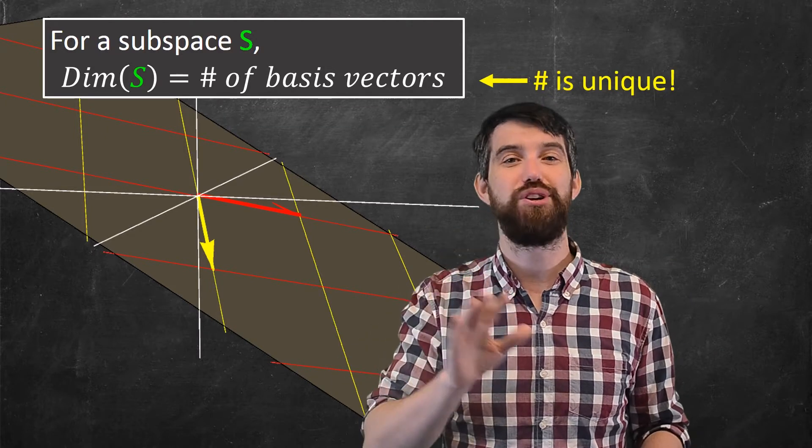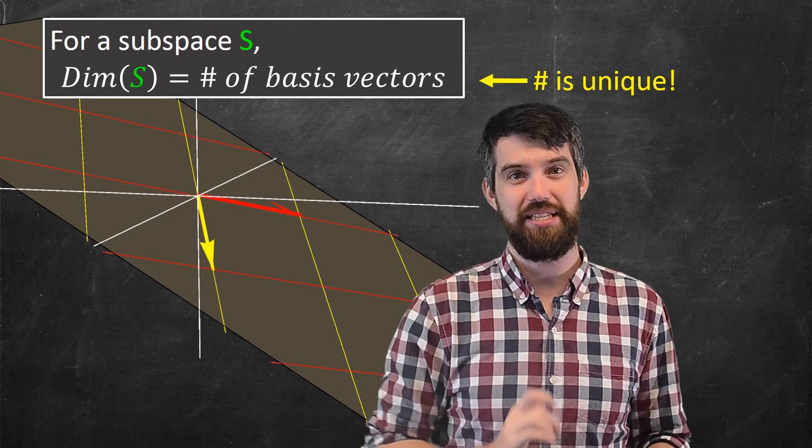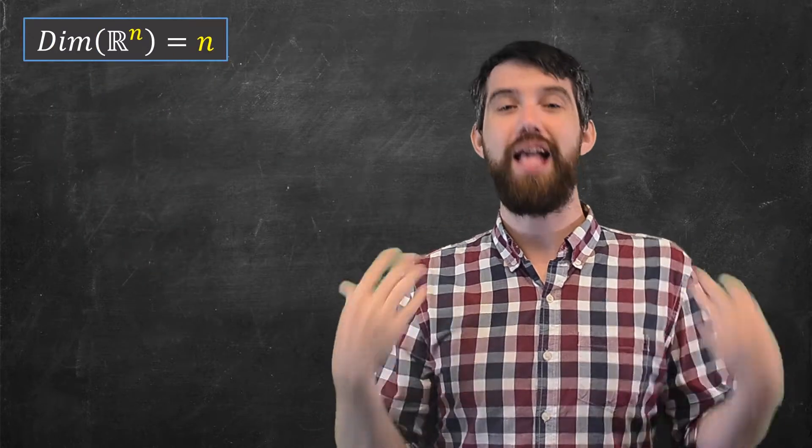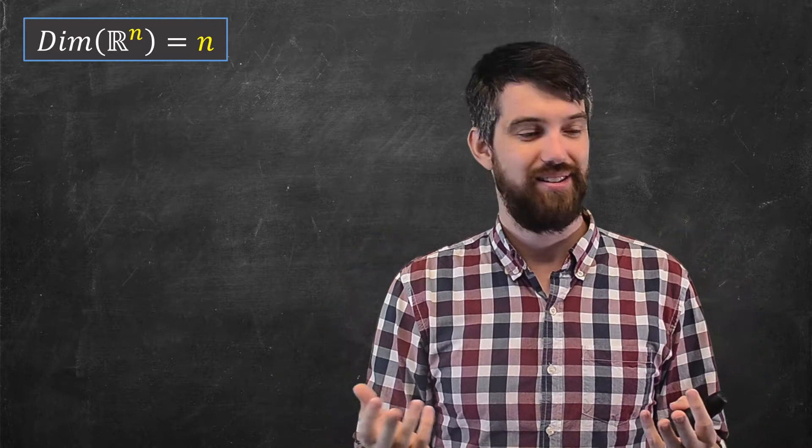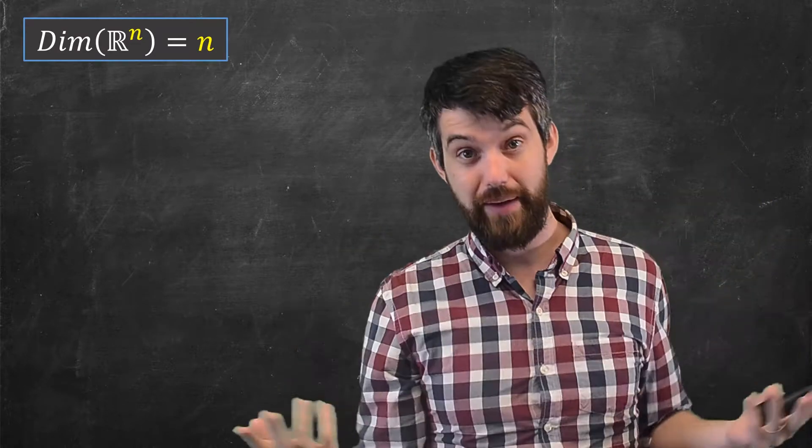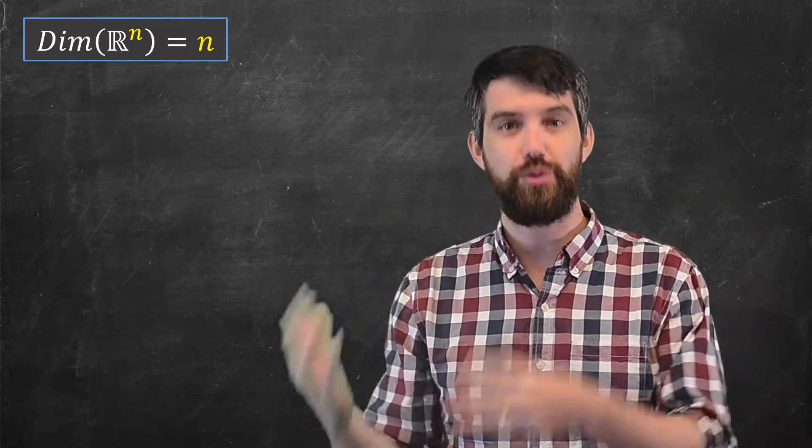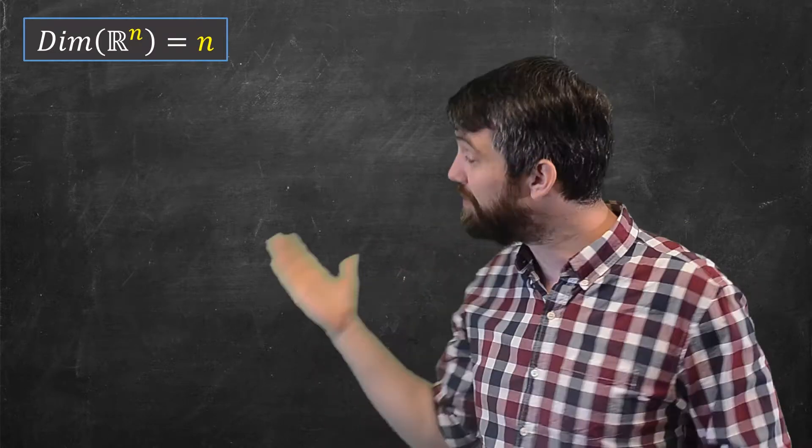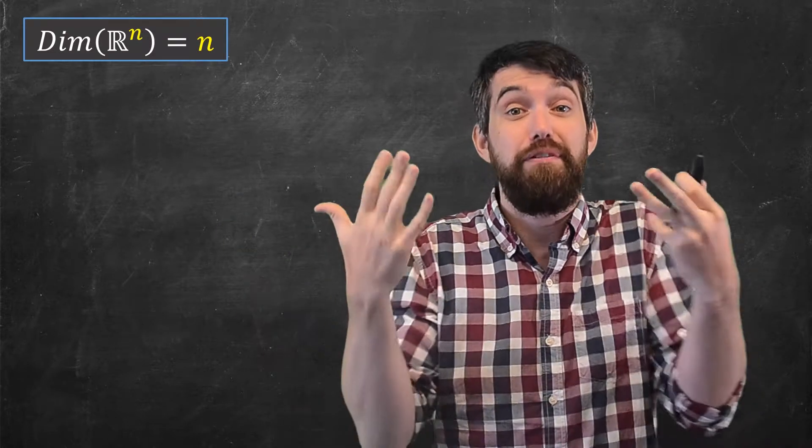Okay, let's look at a couple sort of funky examples, some edge case examples. The first of them is that the dimension of R^n is just n. It seems really obvious, like we're living in three-dimensional space, the dimension of that should be 3, but why is that the case? Well, I have to give you a basis, and it's the number of basis vectors.